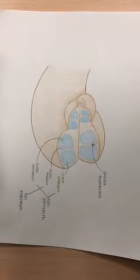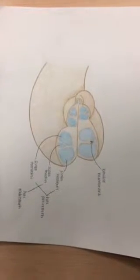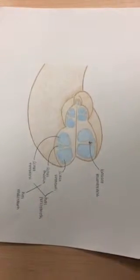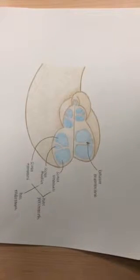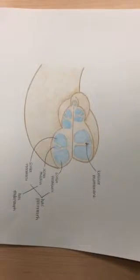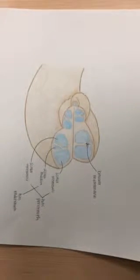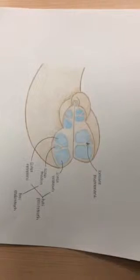The perilymph is the fluid between the membranous and the bone of the ear and is found in the scala vestibuli and the scala tympani. The endolymph is inside the membranous of the ear and is found in the scala media.